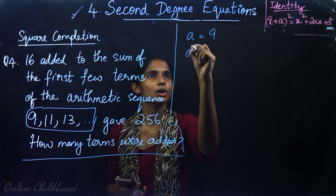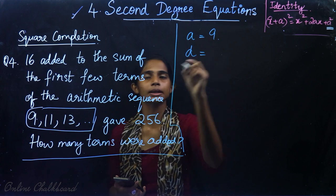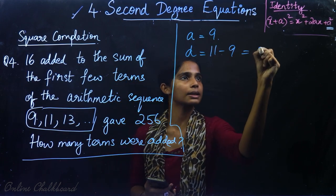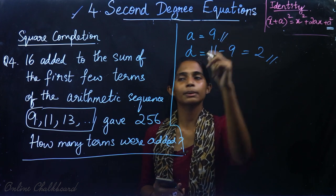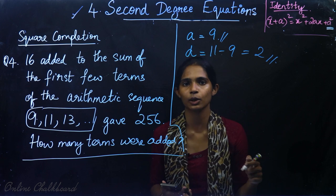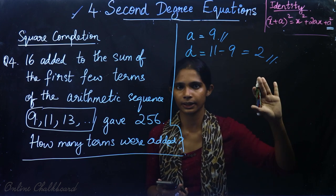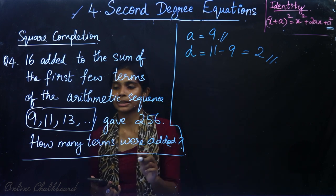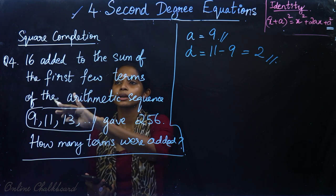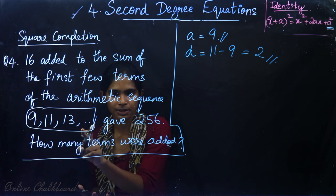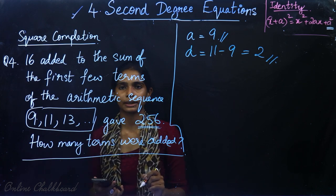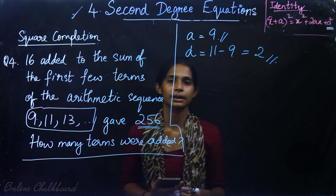For this arithmetic sequence 9, 11, 13: the first term a is 9, and the common difference d is 11 minus 9, which equals 2. We are told that 16 added to the sum of the first n terms gives 256.